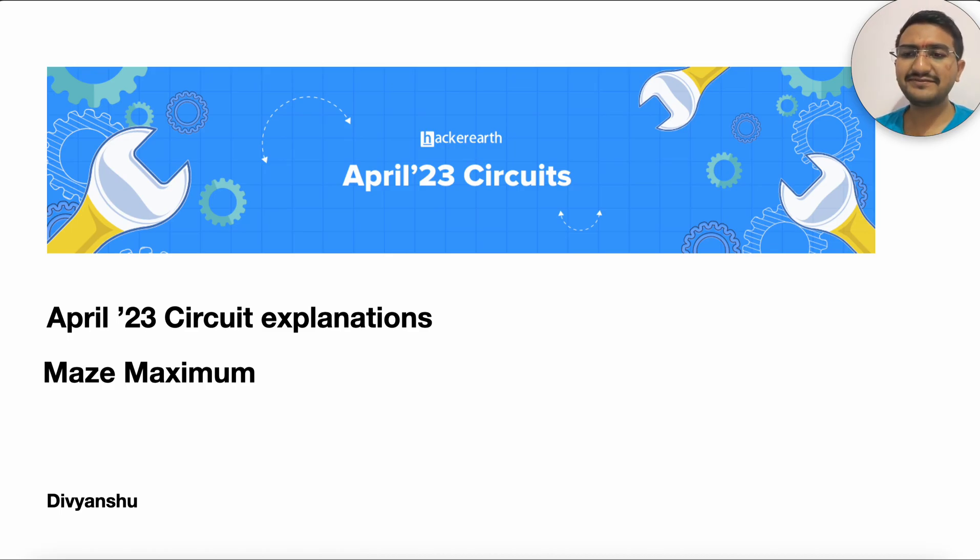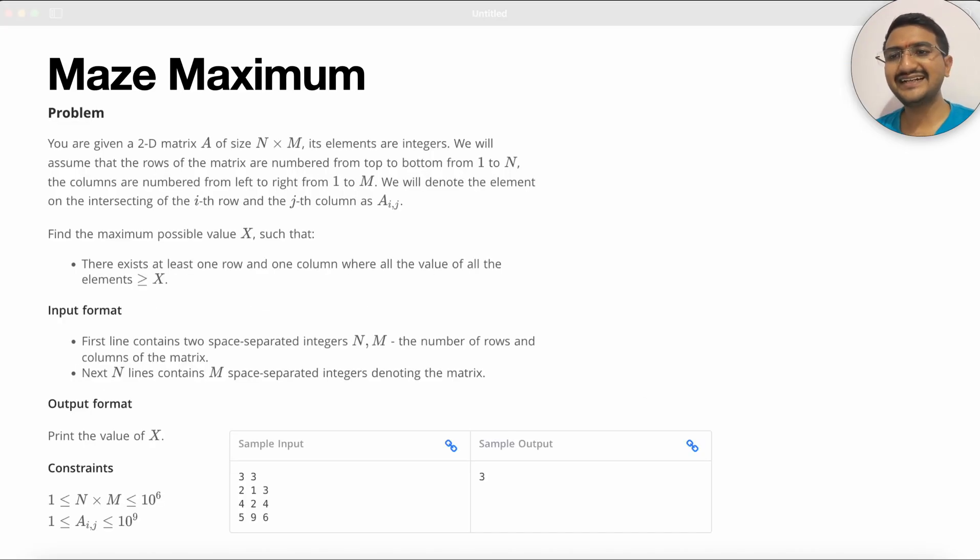The problem name was Maze Maximum and the problem statement was pretty simple. It mentioned that you are given a 2D matrix of size n cross m and we have to find the maximum possible value x such that there exists at least one row and one column where all the values are greater than or equal to x.